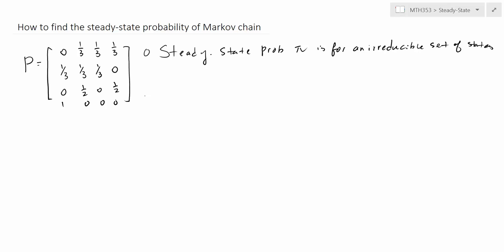There is a rather easy way to do that — and actually this is going to be true for all irreducible sets of states. You just need to pick one state and start from there to see if you can go through all states, make a cycle and come back. If you can do that, then it's going to be an irreducible set of states.